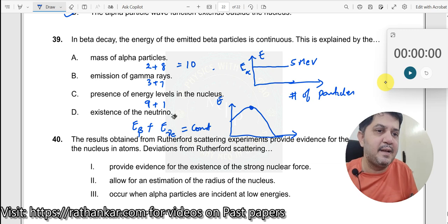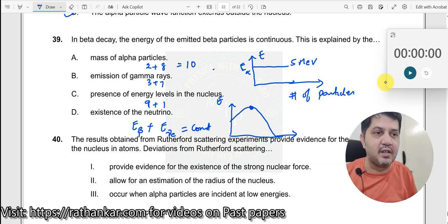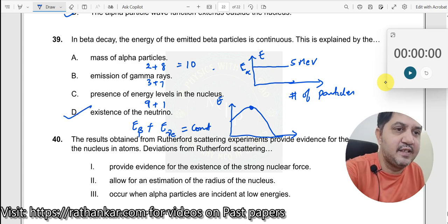sometimes a beta particle will have larger energy, sometimes neutrino will have larger energy. They exchange the energy, and as a result they are getting emitted. Thus, what does it prove? It proved the existence of a new elementary particle, which is the neutrino. D is the right answer.